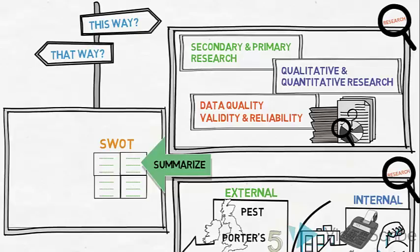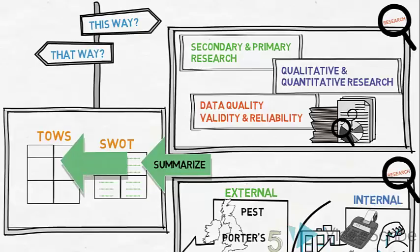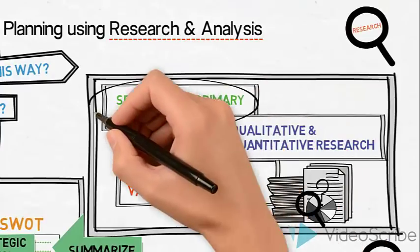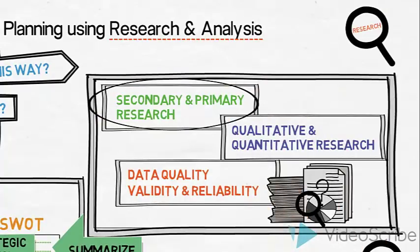This might be followed by a TAUS model in order to identify several strategic options to choose between. This will enable them to make informed strategic decisions about which direction to take. Primary and secondary research is what we will address in this video. So what is primary and secondary research?